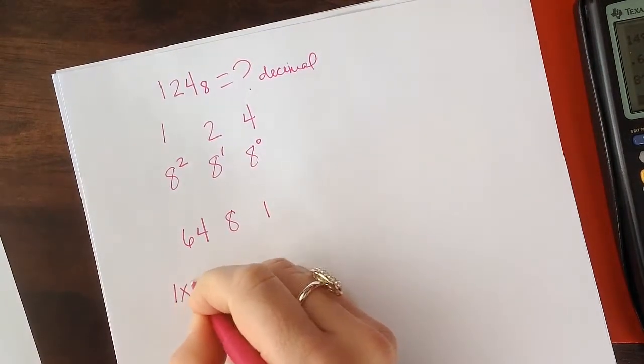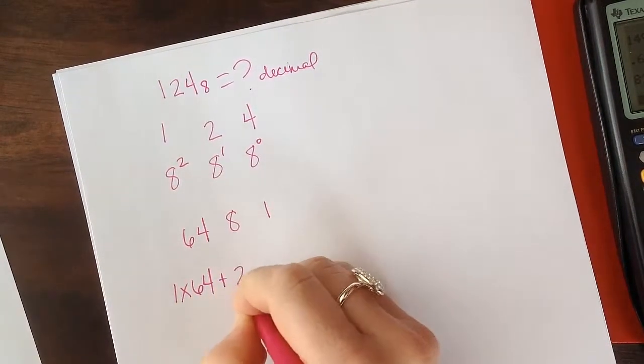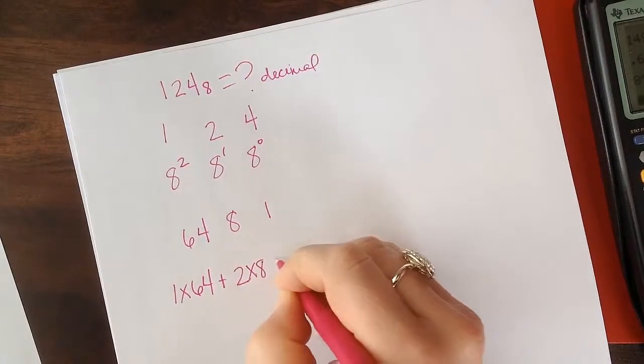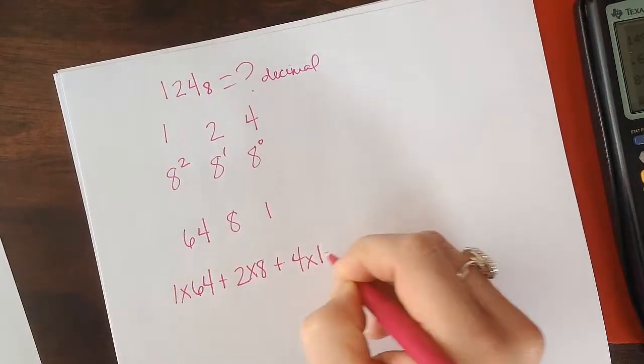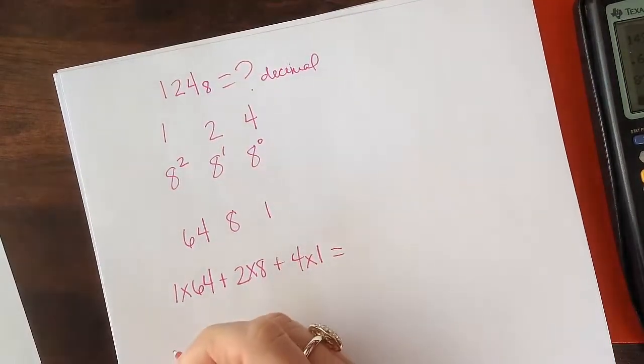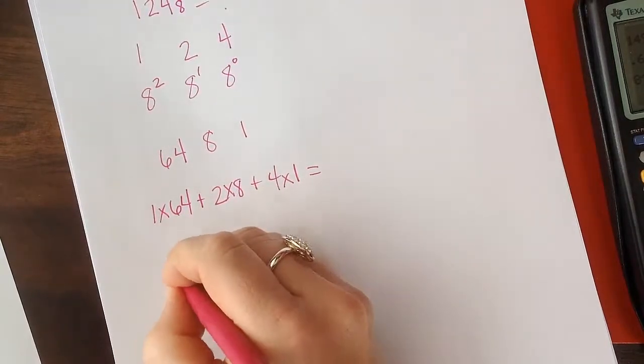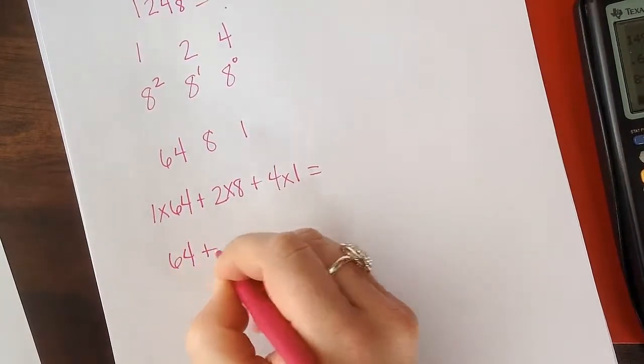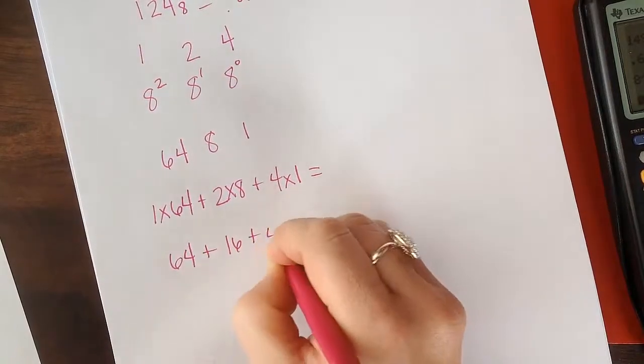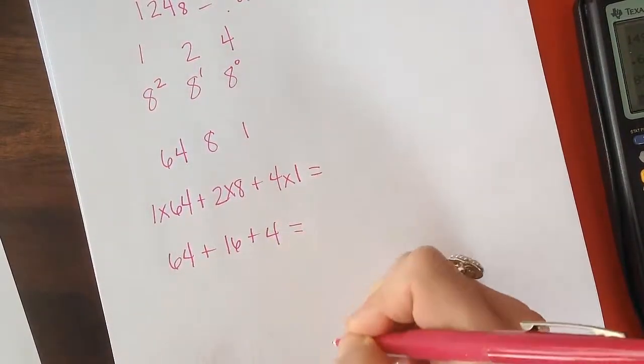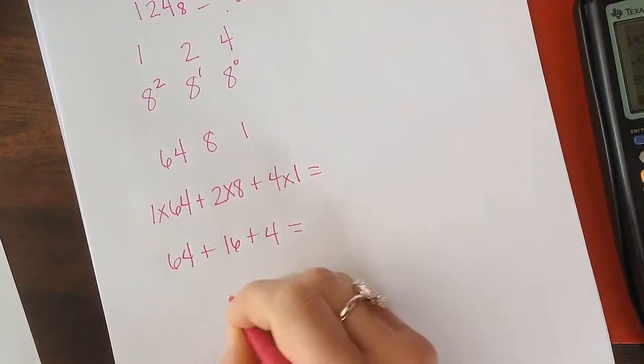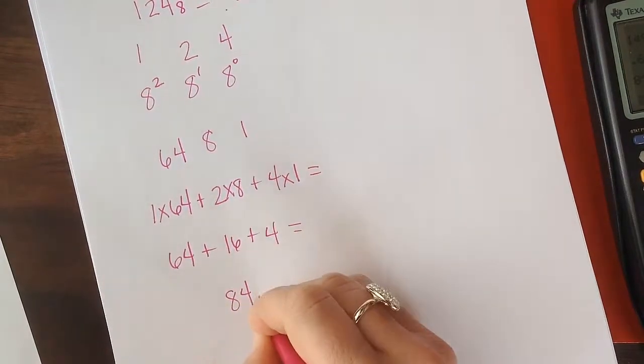We do 1 times 64 plus 2 times 8 plus 4 times 1. So that's going to be equal to 64 plus 16 plus 4. So that's going to be equal to 84 base 10.